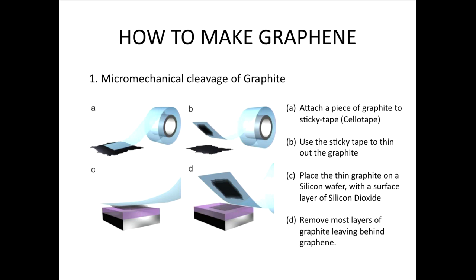Graphene was discovered at the University of Manchester in 2003-2004 using a very simple technique. People had actually been trying to make graphene for a long time — it wasn't something that came up all of a sudden. But ultimately, two gentlemen from Manchester University, Andre Geim and Kostya Novoselov, came up with a very elegant way of making graphene: take sellotape, sticky tape, put it down on graphite and peel away the layers. You can think of it as cutting a deck of cards — the deck is like graphite with many layers, and you keep cutting until you end up with one card.